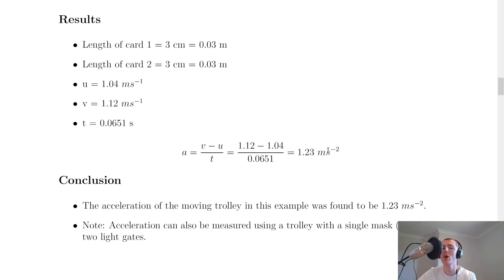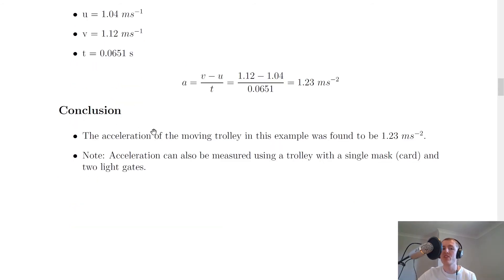So that's an example of how you would measure the acceleration of a trolley down a ramp. As a brief conclusion, the acceleration of the moving trolley in this example was found to be 1.23 meters per second squared.